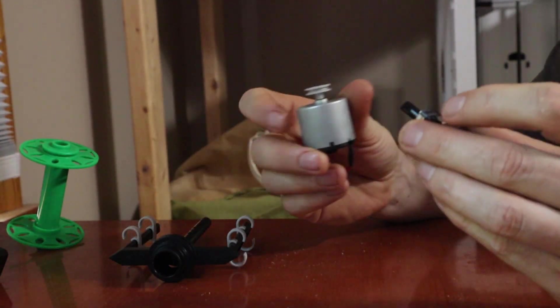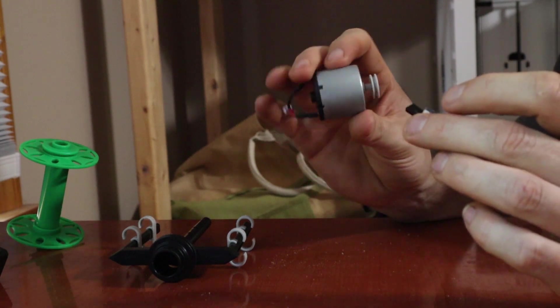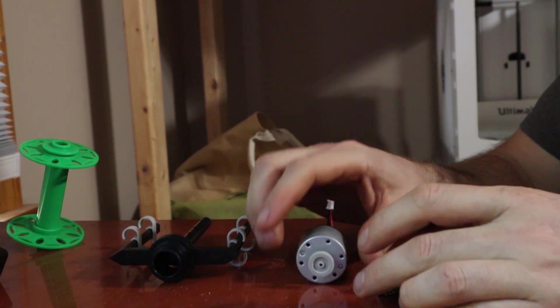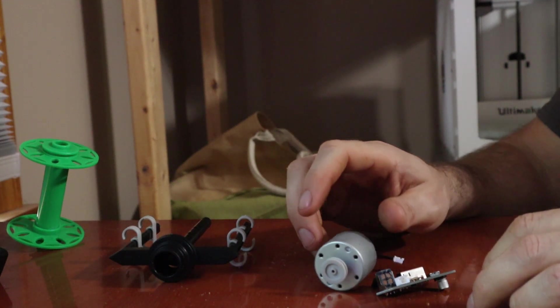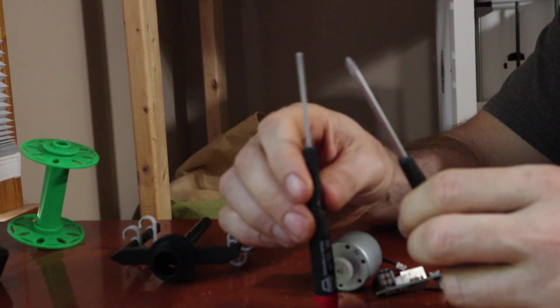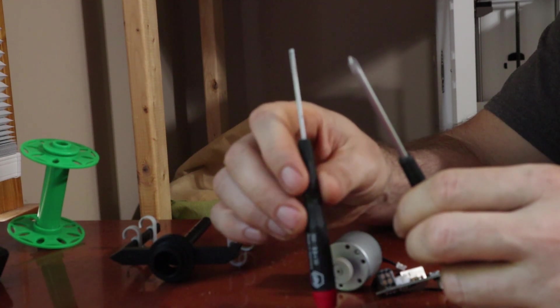And lastly there's the Nano 2 motor and circuit board. So those are the parts that come with it. To do this change you're going to need a pretty small Phillips and flat screwdriver.